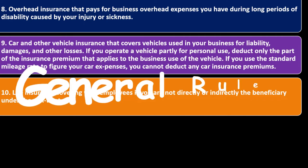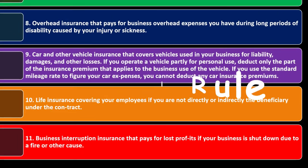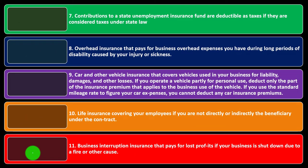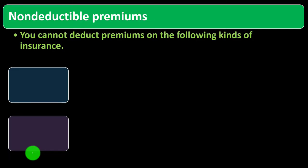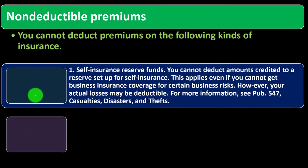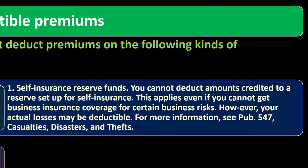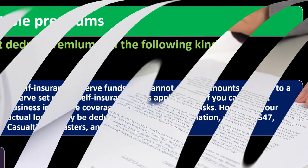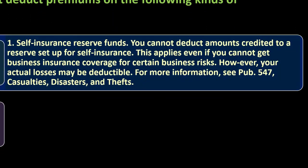Number 10: life insurance covering your employees, if you are not directly or indirectly the beneficiary under the contract. Number 11: business interruption insurance that pays for lost profits if your business is shut down due to a fire or other cause. Now for non-deductible premiums — you cannot deduct premiums on the following kinds of insurance. Number 1: self-insurance reserve funds. You cannot deduct amounts credited to a reserve set up for self-insurance.